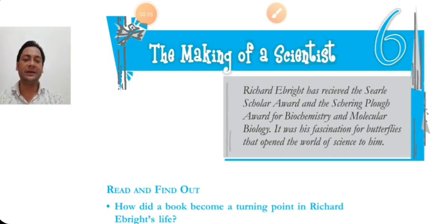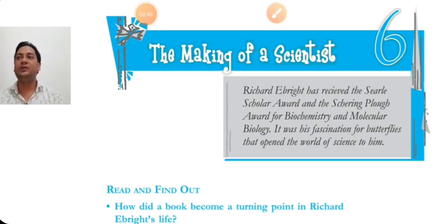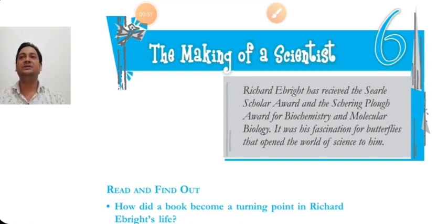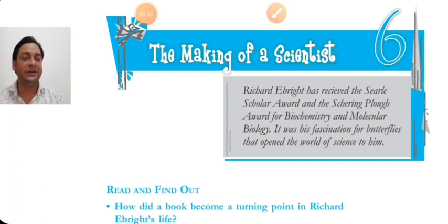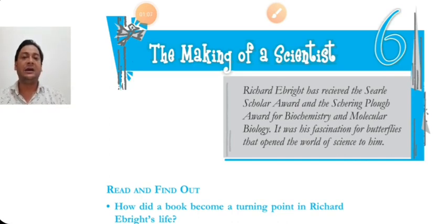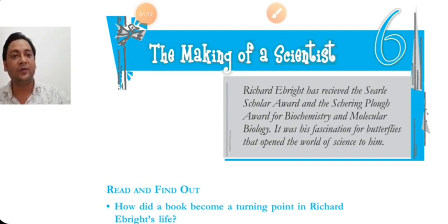The chapter is about a person named Richard Abright, who had a great interest in butterflies from a very young age. At the age of 15, his article was published in a science magazine — a revolutionary achievement in the field of biology. We will cover everything in this chapter.